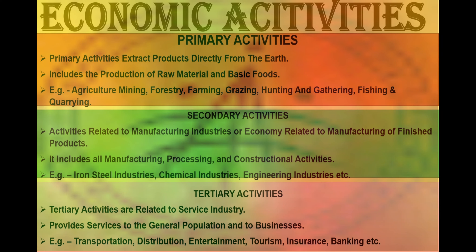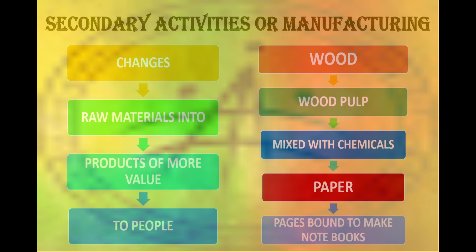Today in this video the main focus is secondary activities, that is manufacturing or industry and its related aspects. Secondary activities or manufacturing is a process where raw material is changed into a product which is more valuable to people. For example, from wood, wood pulp is derived which is changed into paper, and then ultimately this paper is changed into notebooks.